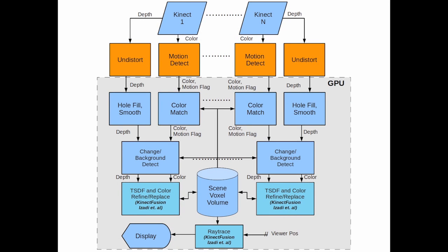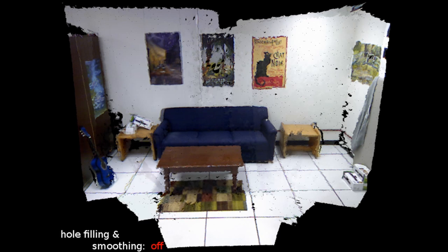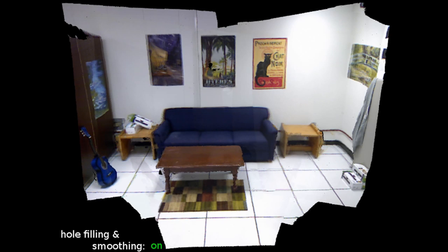The distortions and biases in the depth data are corrected, and motion is detected in the color images for use in later processing. Since the fused depth data of a few motionless depth cameras does not provide adequate denoising, smoothing is applied. Small holes caused by interference between Kinects with overlapping views are also filled.